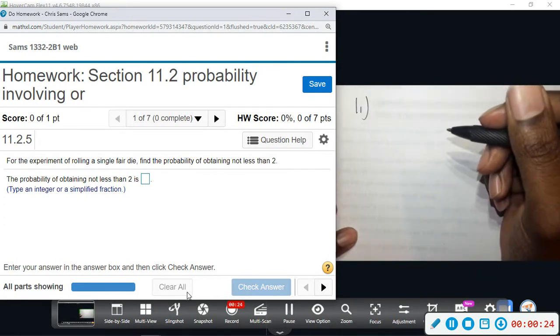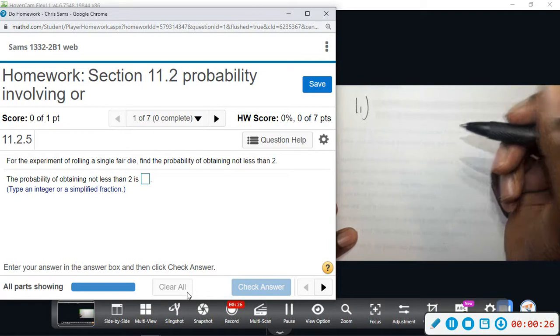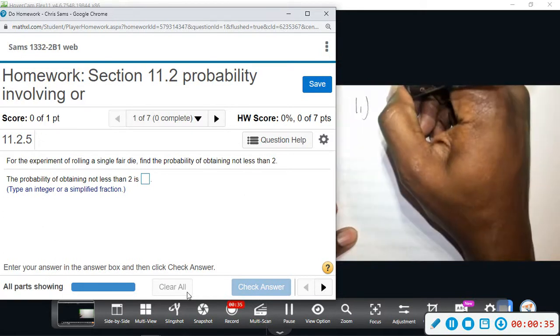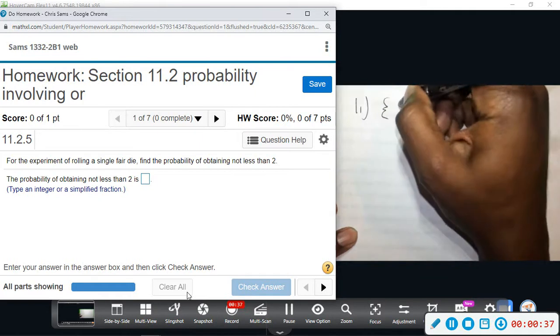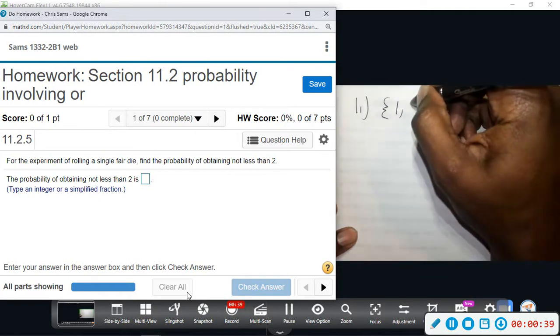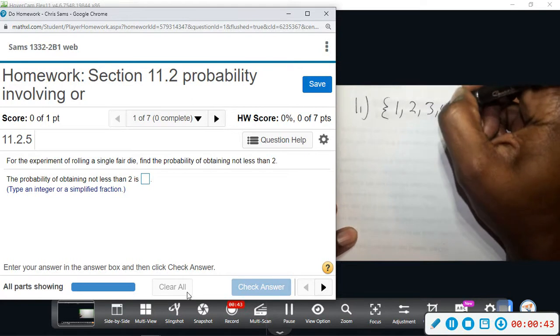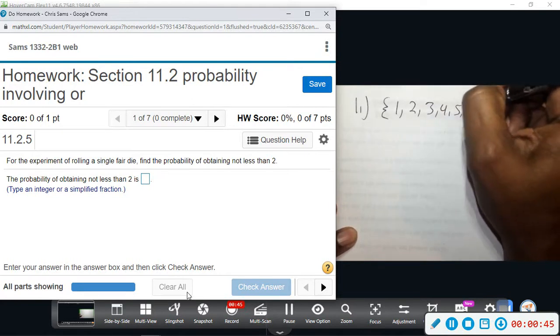The experiment of rolling a single fair die (the plural is dice, but when it's just one they call it a die). Find the probability of obtaining not less than 2. The sample space would be the numbers 1 through 6. There are six sides on the die: 1, 2, 3, 4, 5, and 6.